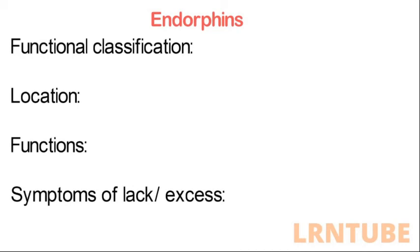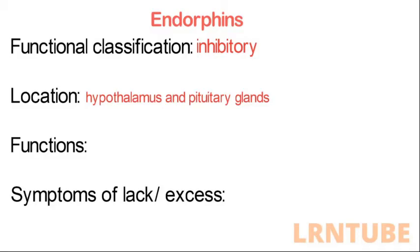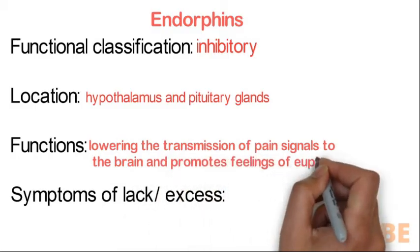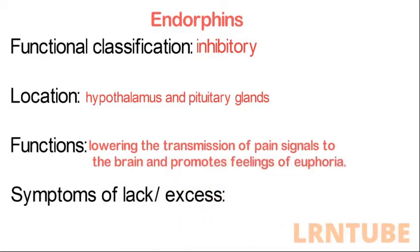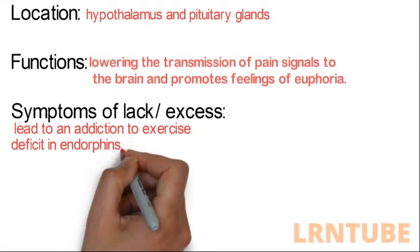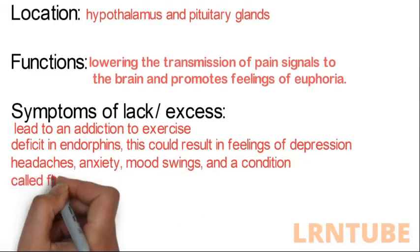Endorphins are classified as inhibitory neurotransmitters and are primarily made within the hypothalamus and pituitary glands. Their functions include lowering the transmission of pain signals to the brain and promoting feelings of euphoria. An excess of endorphins can lead to addiction to exercise. A deficit in endorphins can result in feelings of depression, headaches, anxiety, mood swings, and a condition called fibromyalgia, also known as chronic pain.